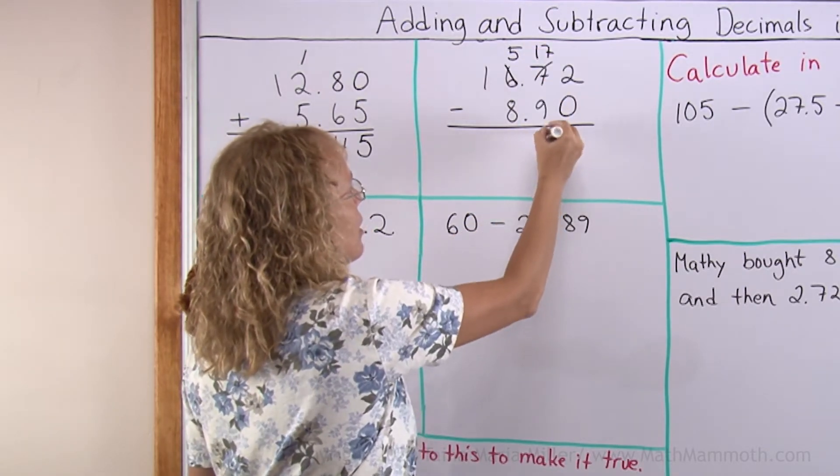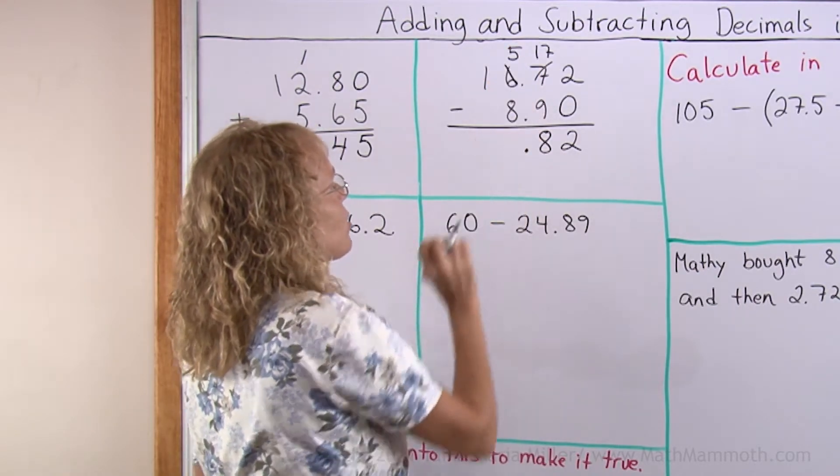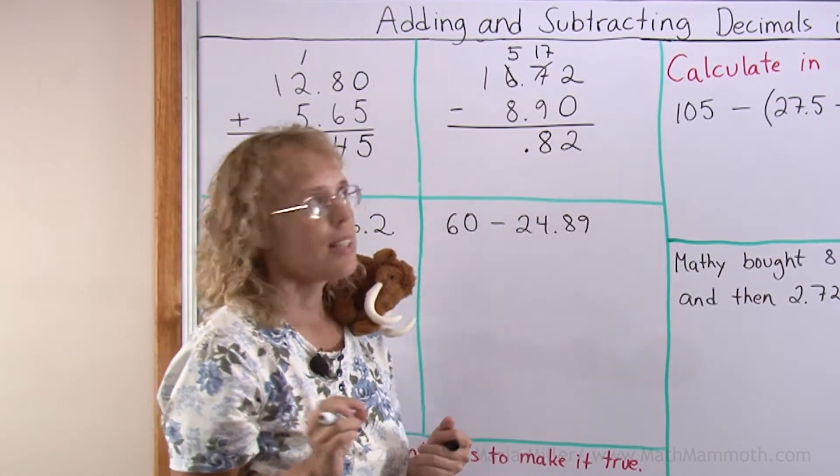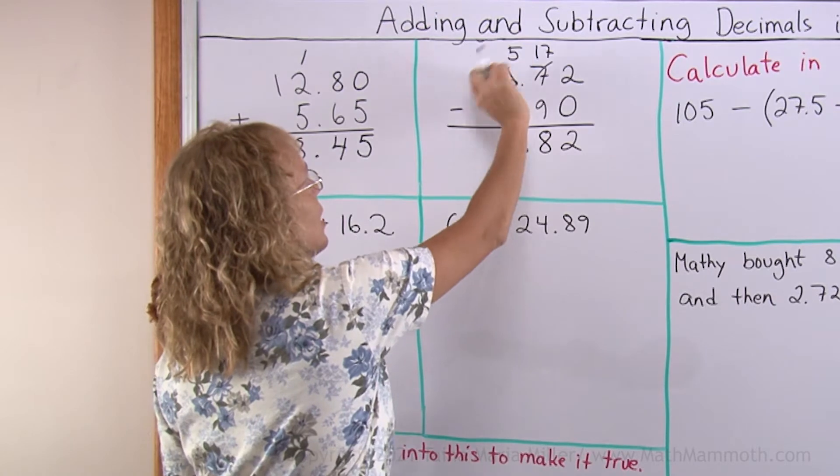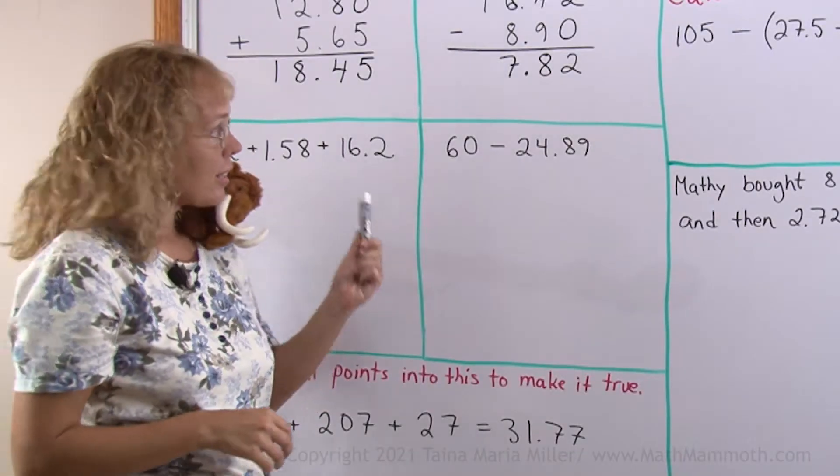I will leave five here and then over here I will have seventeen tenths. So now I can subtract eight tenths. Then the decimal point will be here. Five minus eight. I cannot subtract that either, but I can think of it as fifteen minus eight is seven in the whole numbers.